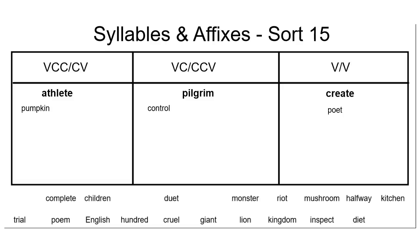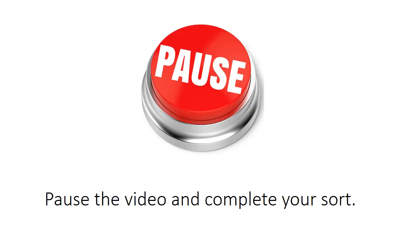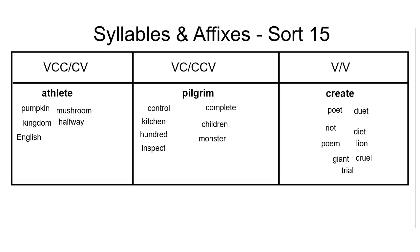Go ahead and continue sorting your words. As you're doing this, be very careful to notice where the syllable breaks and what letters are on either side of the syllable juncture. As you sort your words this week, it might be helpful to practice a few extra times since we are looking specifically at what letters come before and after the syllable juncture. Additionally, pay very close attention to the fact that the E in English is an uppercase E due to the fact that English is a proper noun.